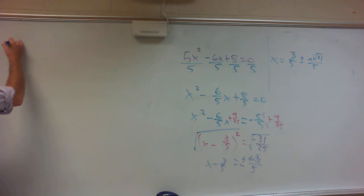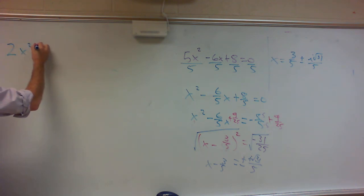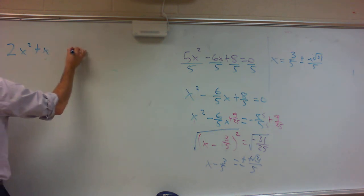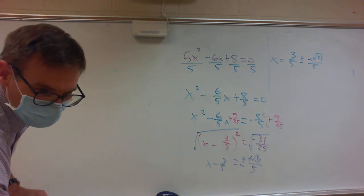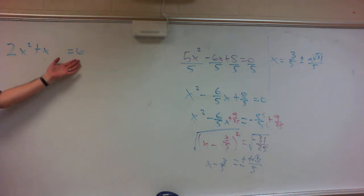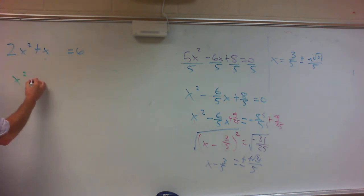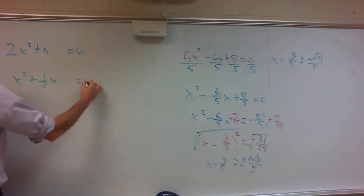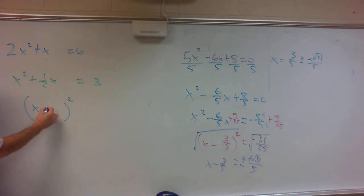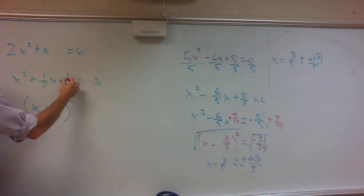What if I give you 2x squared plus x equals 6? I already have the number on the right, so divide everything by 2. That gives me x squared plus 1 over 2x equals 3. Now complete the square: half of 1 half is 1 fourth. Square 1 fourth to get 1 over 16. Add 1 over 16 to both sides.